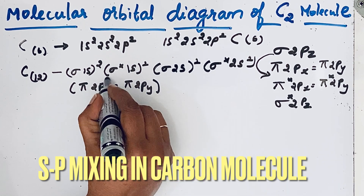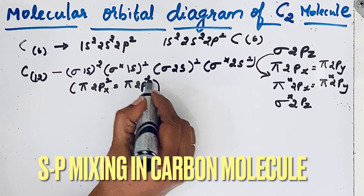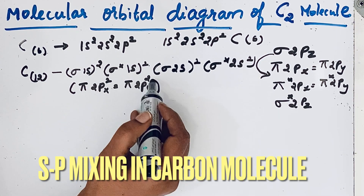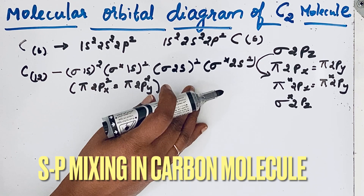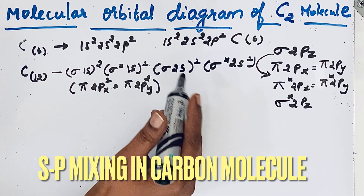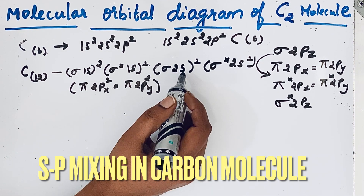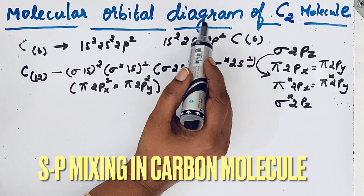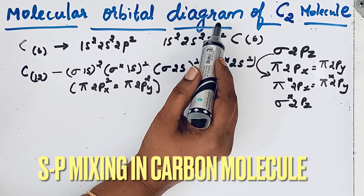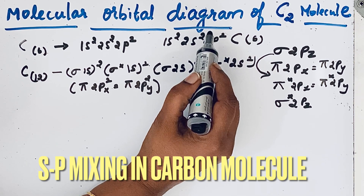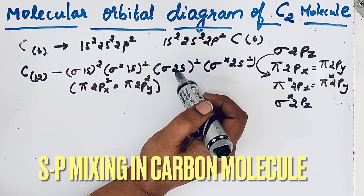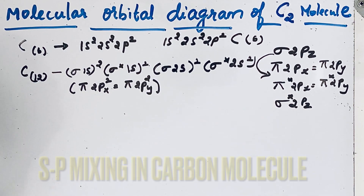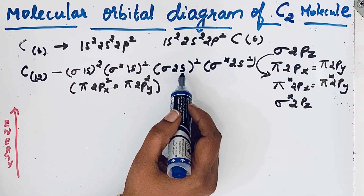Pi 2px has 2 electrons and pi 2py has 2 electrons. Counting all electrons: 2, 4, 6, 8, 10, 12 — so 12 electrons are present. Using this molecular orbital configuration we can draw the molecular orbital diagram. The molecular orbital diagram is the graphical representation in which molecular orbitals are arranged in increasing energy.